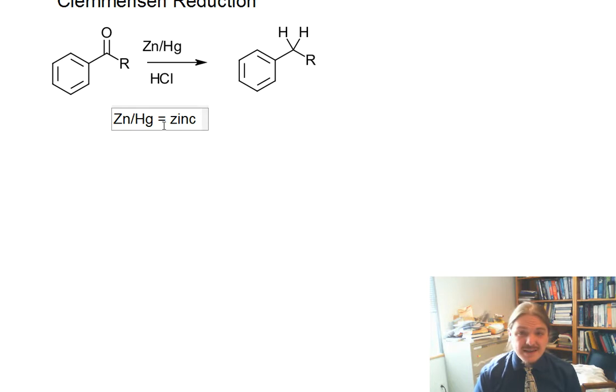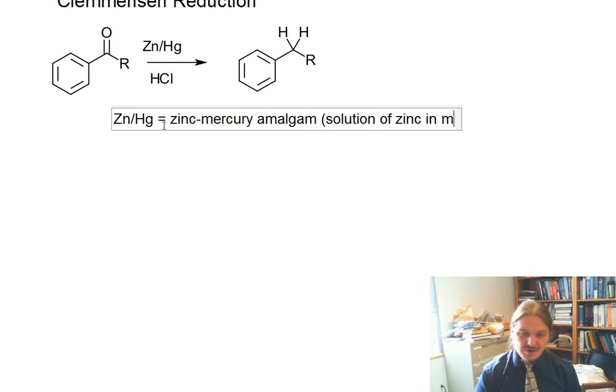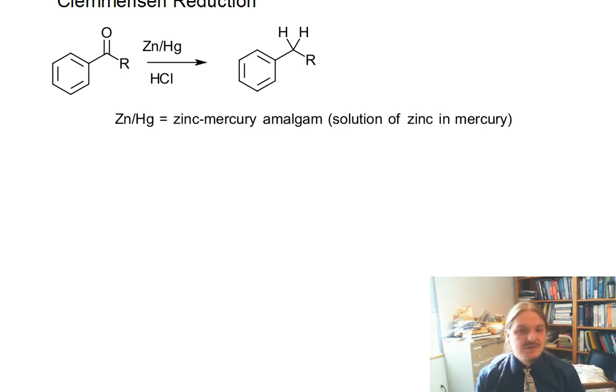Let's rephrase that. Zinc-mercury amalgam is a solution of zinc in mercury. Mercury is a liquid, so it can act as a solvent, and solutions of other metals in mercury are called amalgams.